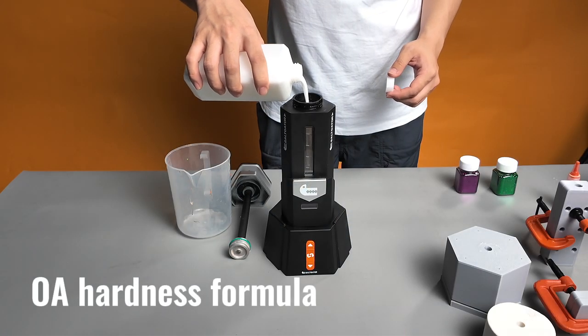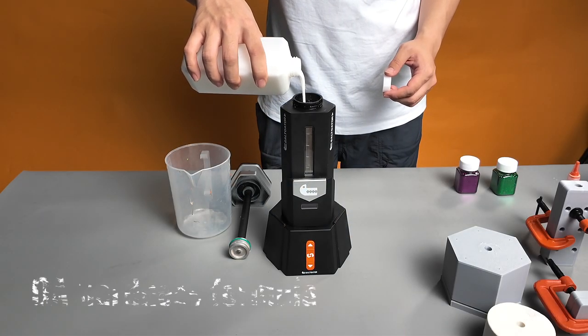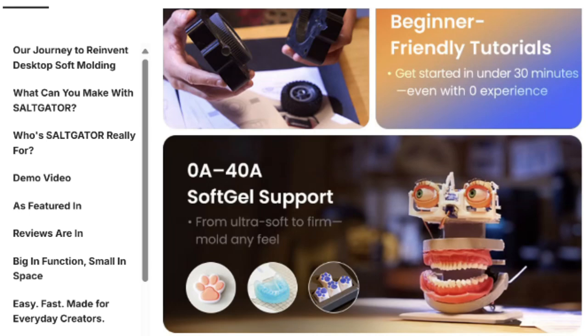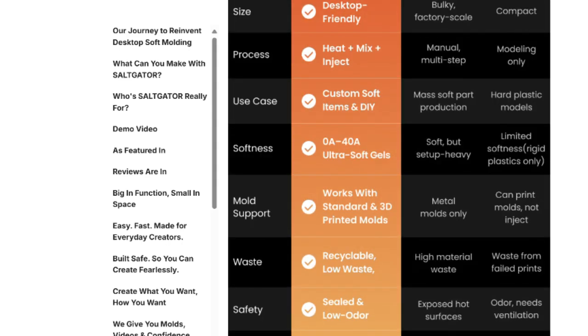In this video, we're working with our Zero-A hardness formula. As stated on our website, SaltGator can produce finished parts ranging from Zero-A to Forty-A hardness.